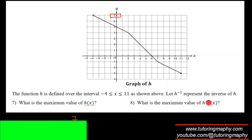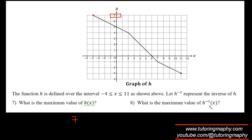For the maximum value of h⁻¹(x): since x and y values interchange in an inverse function, the maximum of h⁻¹ is really asking for the maximum x-coordinate of the original h function. The maximum x-value of h is 11, so the answer is 11. On the left we found max y = 7; here we find max x = 11.